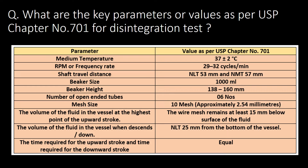What are the key parameters or values as per USP chapter 701 for the disintegration test? You can refer to the table below for key parameters like medium temperature, RPM or frequency rate, shaft travel distance, beaker size, beaker height, number of open-ended tubes, and other key parameters.